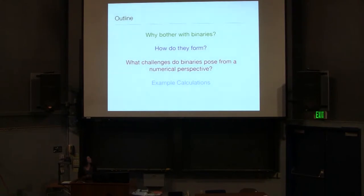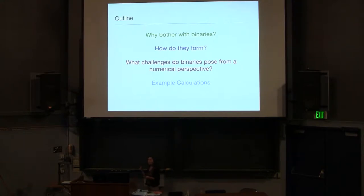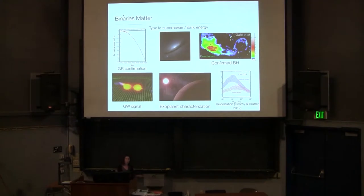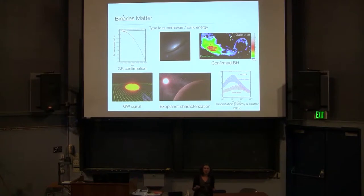So just a quick outline: first, why should we bother thinking about binaries if we're talking about star and planet formation? I'm going to very briefly describe some of the ways we think they form, but that's not going to be the focus. What I really want you to consider is what are the specific challenges that binary star systems present to us as simulators, and I'll show some example calculations. So why bother with binaries? Some of you have probably seen this slide before, but I just want to emphasize that binaries are really fundamental to so many branches of astrophysics.